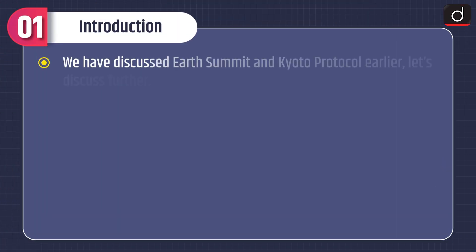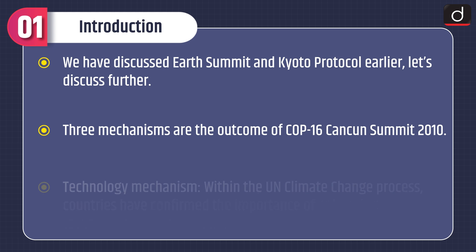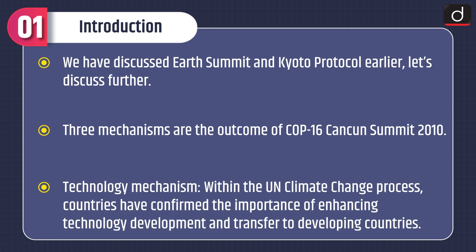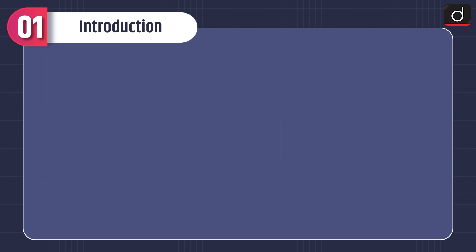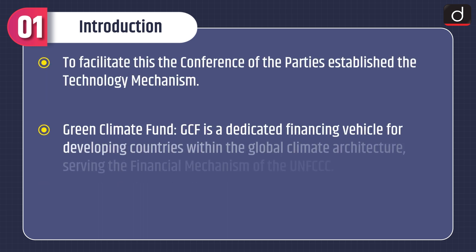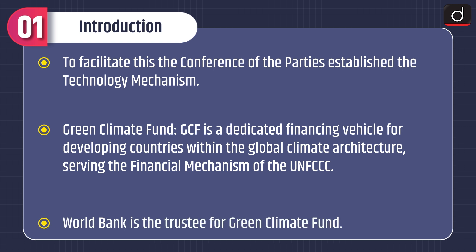Let's have a look at a brief introduction of the topic. We have discussed Earth Summit and Kyoto Protocol earlier. Three mechanisms are the outcome of COP16 Cancun Summit 2010. The first is the Technology Mechanism: within the UN climate change process, countries have confirmed the importance of enhancing technology development and transfer to developing countries. To facilitate this, the Conference of the Parties established the Technology Mechanism.